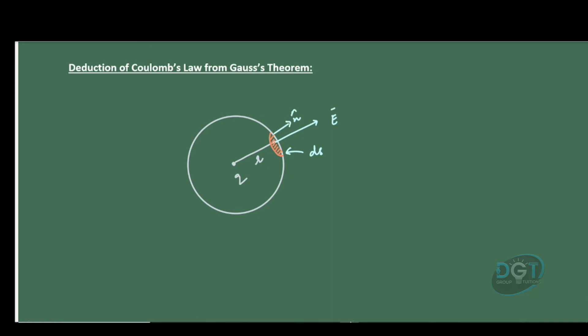Now according to Gauss's theorem, the surface integral of E·ds equals the total charge divided by epsilon naught: ∮E·ds = q/ε₀.